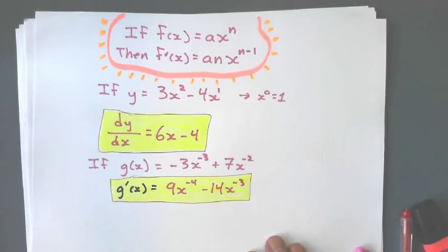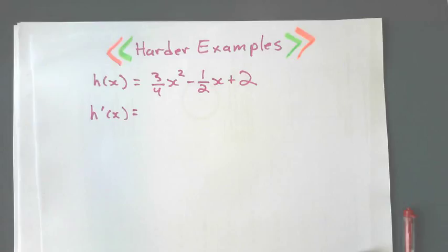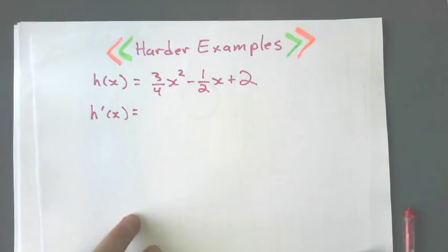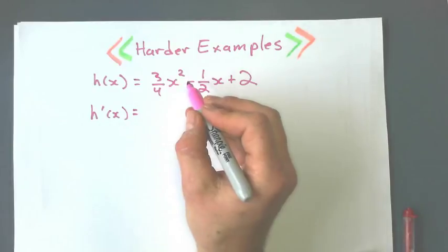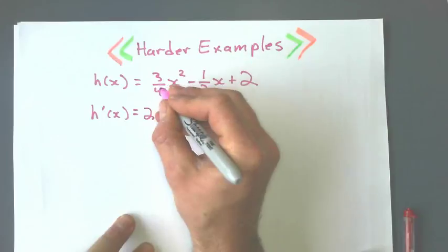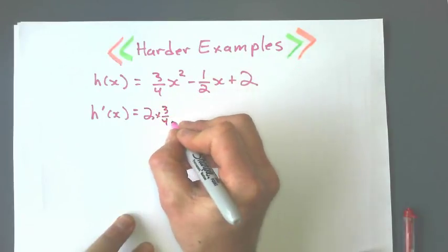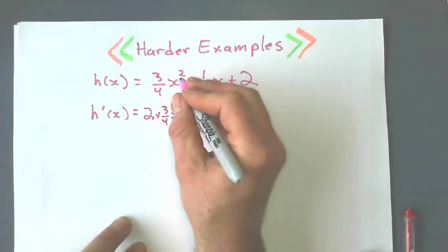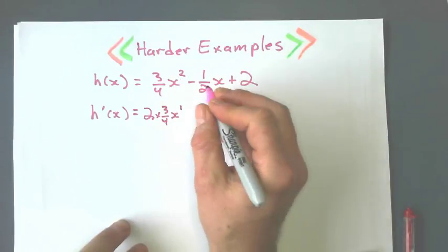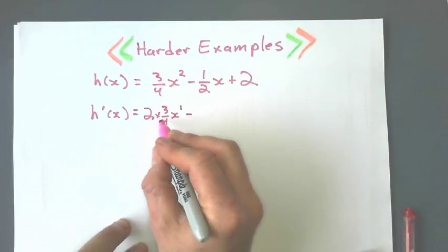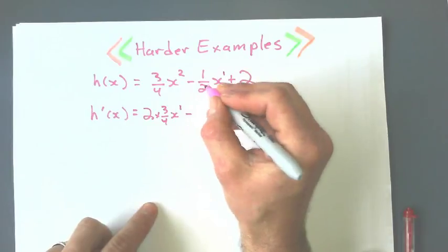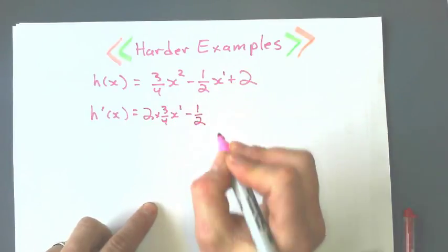Now we'll try some harder examples. So let's take a look at this one. The only thing different here is that my coefficients are fractions. Same rules apply. Take the exponent, put it in front, and multiply it. And I'll write this one out a little bit more. This is 2 times 3 quarter, and after I take 1 off that exponent, it becomes 1.